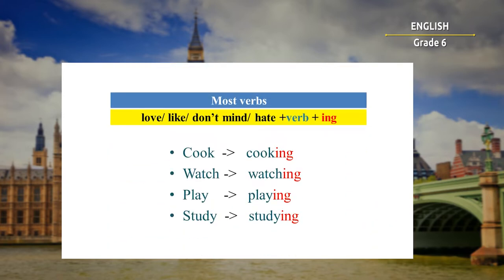We will learn new rules, so be careful. Take your copybooks and pens and write them down. As we already discussed, we must use the -ing ending with the verb if we have verbs like love, like, don't mind, and hate.